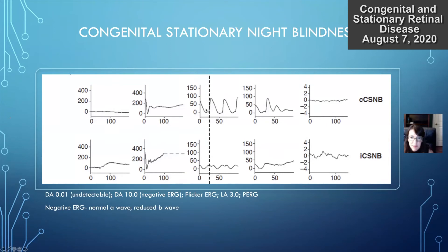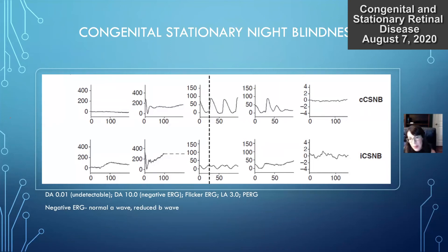With the light flicker ERG, the complete form has more cone function so the flicker ERG will be normal, whereas incomplete shows more depressed findings. On the light-adapted ERG — more of a cone response — there's some cone response in complete, but with the incomplete form and more cone involvement, you see more flattening. For ERG interpretation, knowing whether you're in a dark-adapted or light-adapted state matters, and remembering that the A wave reflects outer retina and B wave reflects inner retina lets you predict ERG findings for different pathologic conditions.